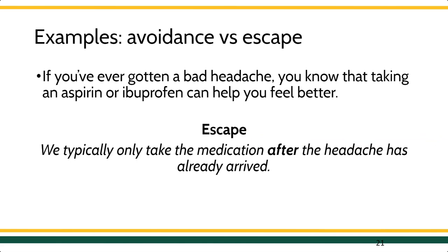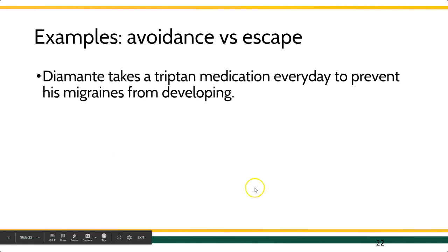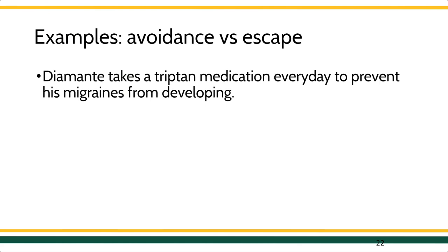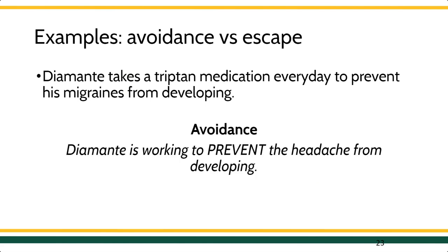But not all medication-taking behavior is escape-maintained. Like Diamante, who takes a triptan medication every day to prevent migraines from developing — this is probably avoidance. With a condition like migraines, taking medication to prevent something from happening means you're working to avoid it; you never want it to come. This could be migraine medication, blood pressure medication, or antidepressants — you're working actively to prevent something from ever coming your way, nipping it in the bud before it's ever delivered. So this is avoidance-maintained behavior.